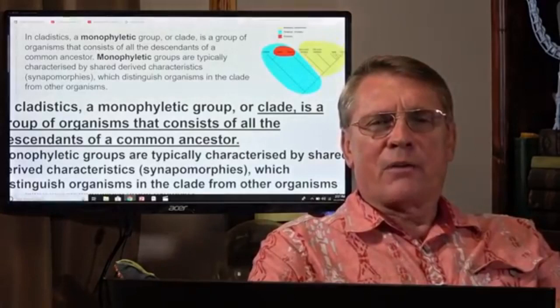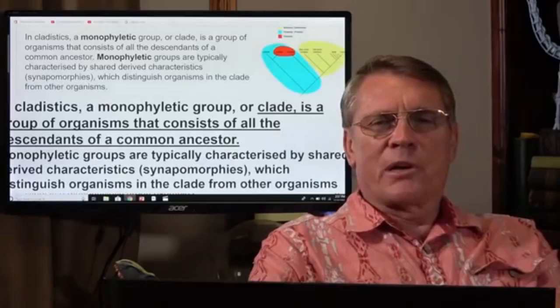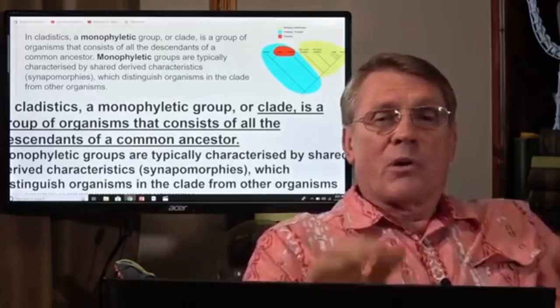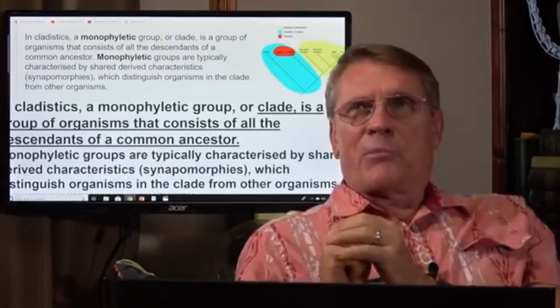Monophyly. Cladistics. A monophyletic group, or clade, is a group of organisms that consists of all the descendants of a common ancestor. Oh. So a clade is all the ones that came from a common ancestor. I would be willing to say probably all the dogs came from a dog.